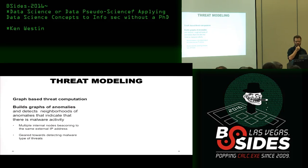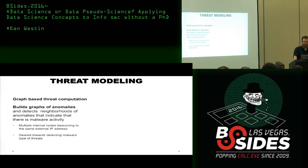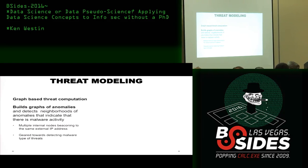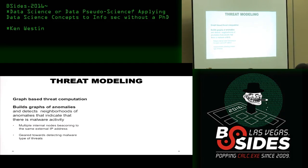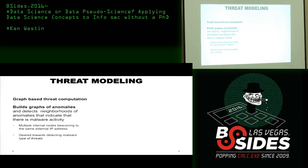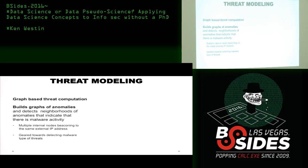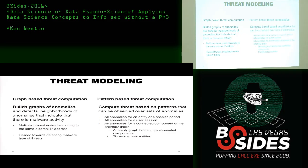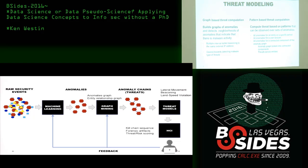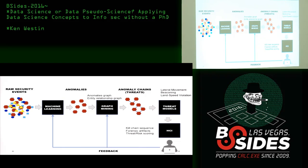One thing I want to incorporate from data science is threat modeling with graphs. Graph-based threat computation is where we're actually able to build graphs of anomalies and detect neighborhoods of anomalies that indicate malware activity — for example, multiple internal nodes beaconing to the same IP address. We also have pattern-based computation, where we compute threat based on patterns observed over sets of anomalies. This is where, when you're identifying anomalies within the environment, we want to map that to the threat models — and that's where substantive experience comes in.